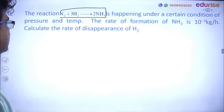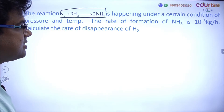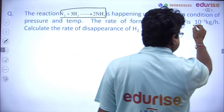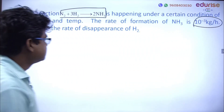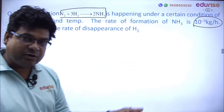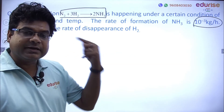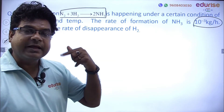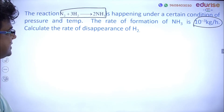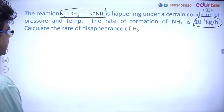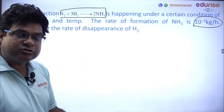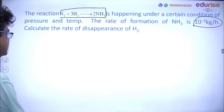Next question: the reaction N₂ + 3H₂ → 2NH₃ is happening under certain conditions of pressure and temperature. The rate of formation of ammonia is given as 10⁻³ kg per hour. We have to calculate the rate of disappearance of H₂. First, we write the rate of reaction in terms of per mole: rate of disappearance of reactant per mole = rate of appearance of product per mole.